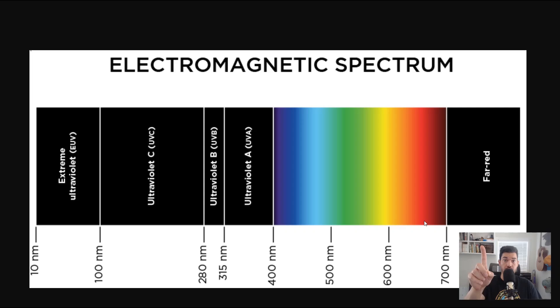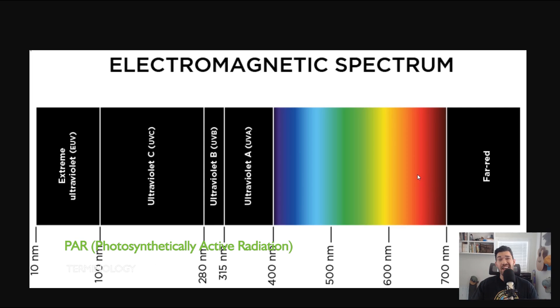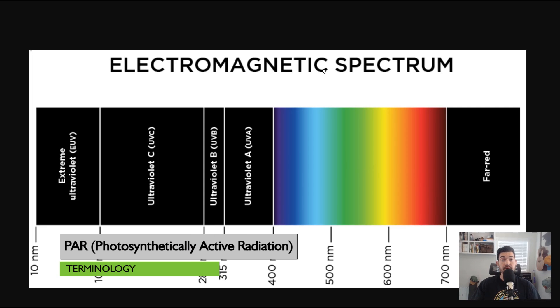Before we get into that, we have to define terminology. Let's put our nerd hats on, go into the classroom, and talk about a couple of different acronyms you have to know before we get into the myths. Our first piece of terminology is PAR, or photosynthetically active radiation.